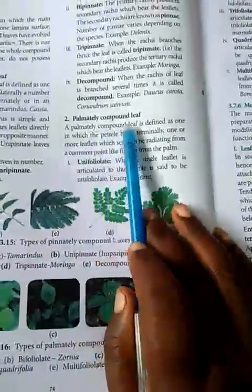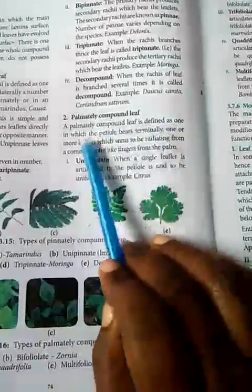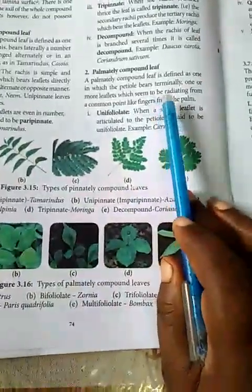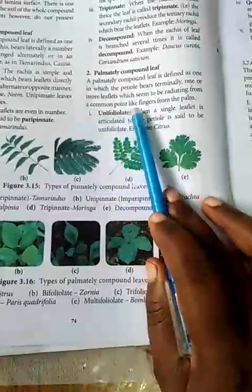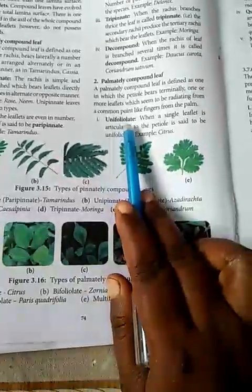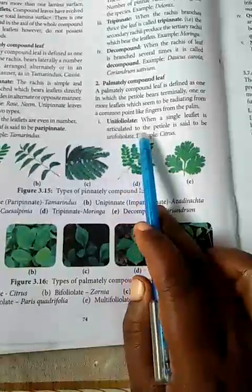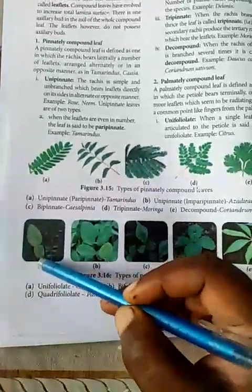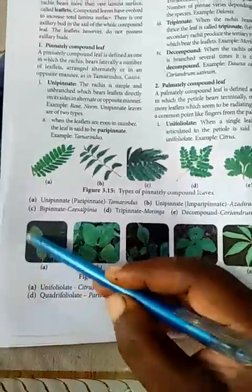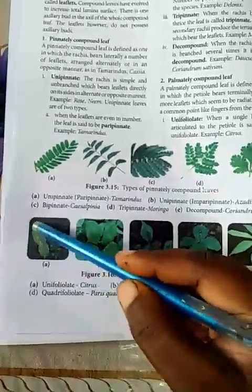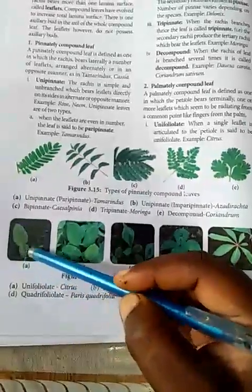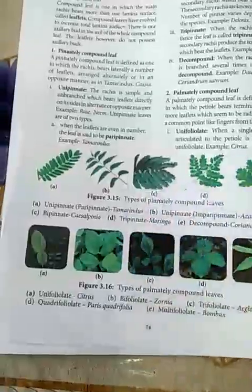A palmately compound leaf is defined as one in which the petiole bears terminally one or more leaflets that seem to radiate from a common point, like fingers from the palm. In unifoliate, a single leaflet is articulated to the petiole — two lobes are present — as found in citrus or lemon plants.